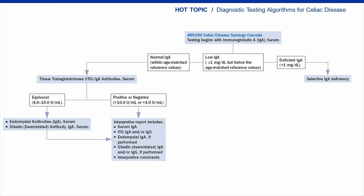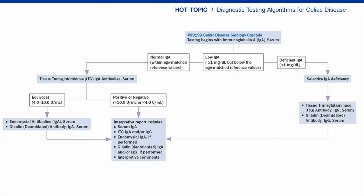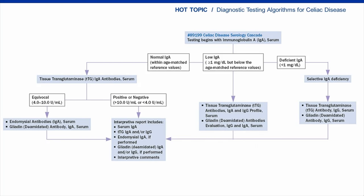For individuals with no detectable IgA or selective IgA deficiency, TTG and deamidated gliadin testing is performed but only the IgG isotypes, and these results are released in the final report along with the total IgA quantitation. For those individuals with low but detectable IgA, both IgA and IgG isotypes for TTG and deamidated gliadin are performed. This cascade is designed to identify patients who may have celiac disease and in whom a biopsy would be suggested. It is not applicable to patients following a gluten-free diet due to the possibility of a false negative serology result.